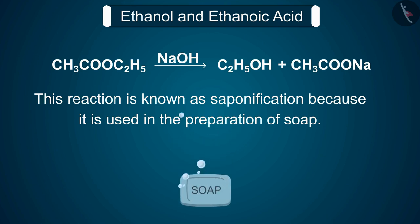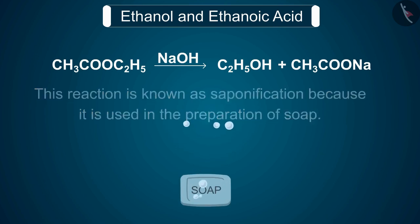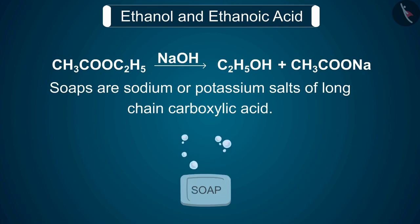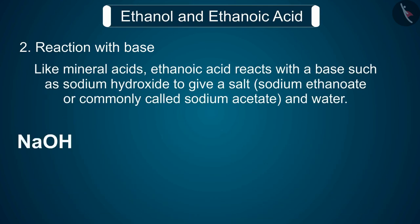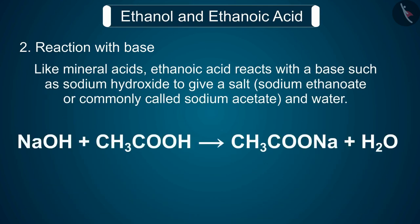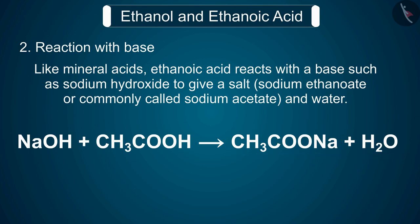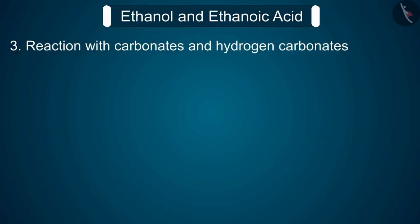Saponification is used in the preparation of soap. Soaps are sodium or potassium salts of long chain carboxylic acids. Reaction 2: reaction with base. Like mineral acids, ethanoic acid reacts with a base such as sodium hydroxide to give salt — sodium ethanoate, or commonly called sodium acetate — and water.